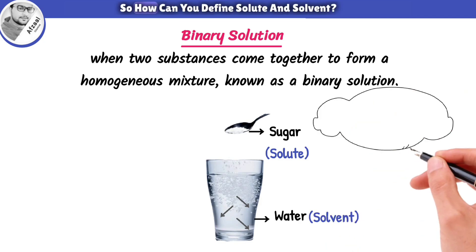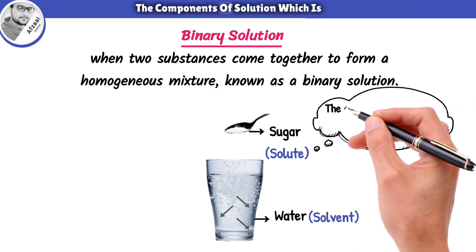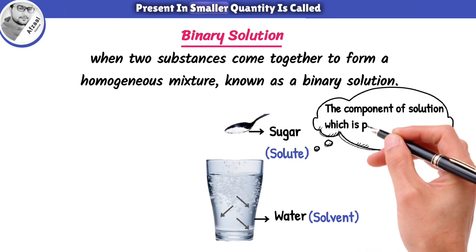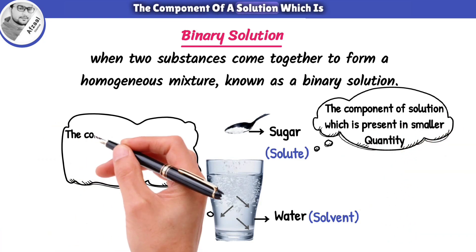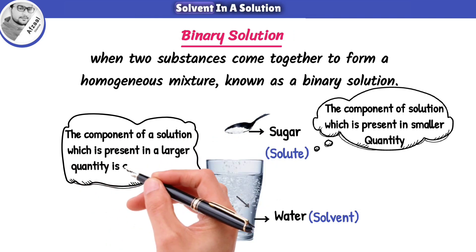So how can you define solute and solvent? The component of solution which is present in smaller quantity is called solute. The component of a solution which is present in a larger quantity is called solvent.